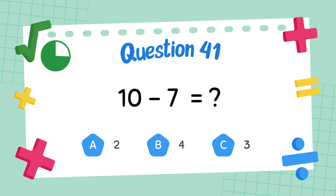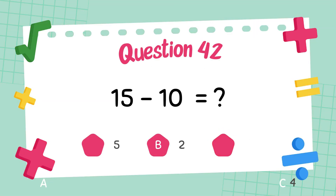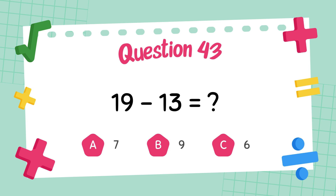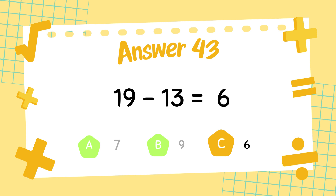What is 10 minus 7? The answer is 9. What is 19 minus 13? The answer is 6.